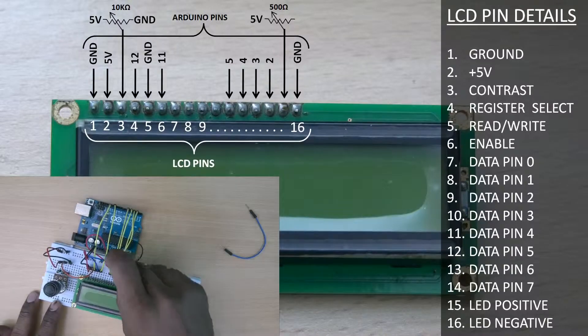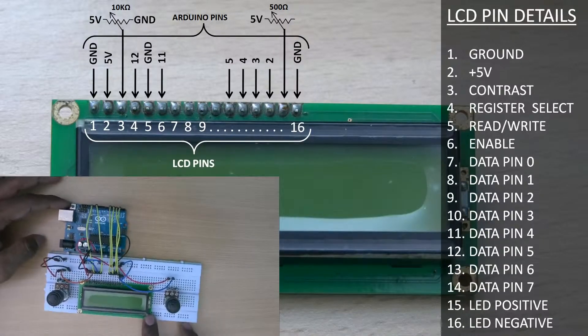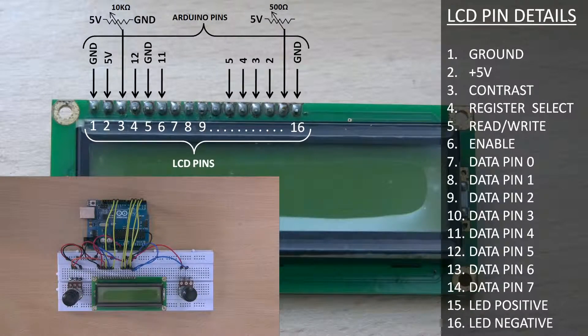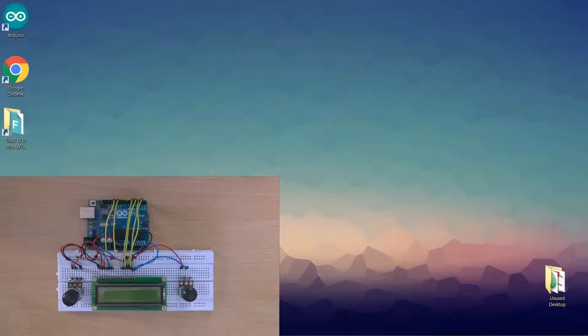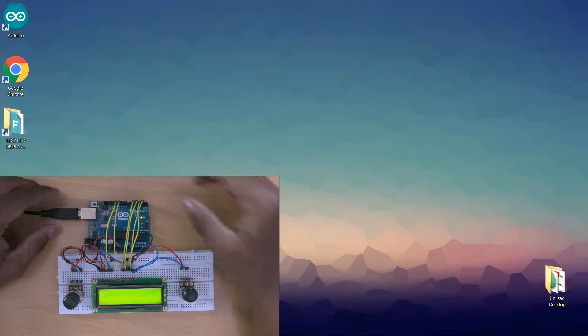LCD pins 15 and 16 are backlight LED pins which are to be connected through a potentiometer to change the brightness of the display, or you can give 5 volts directly. After connecting all the jumper cables connect your Arduino board to your computer.